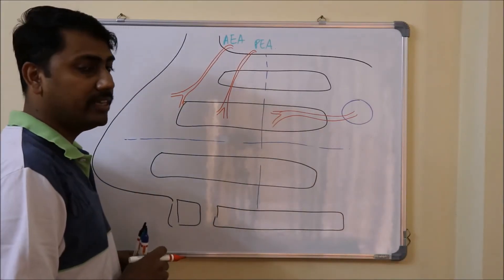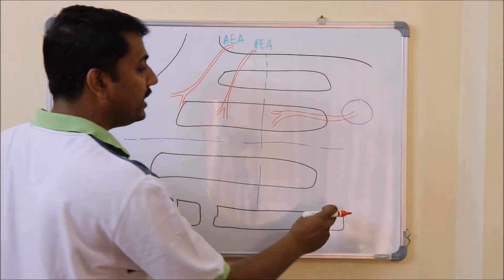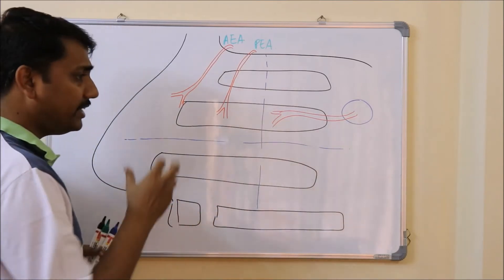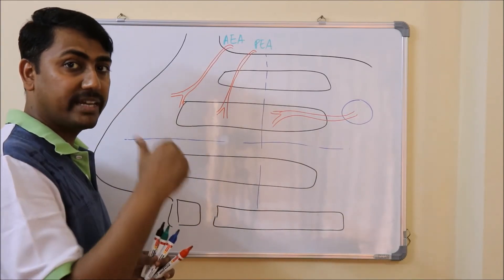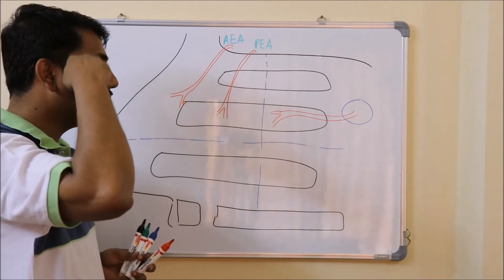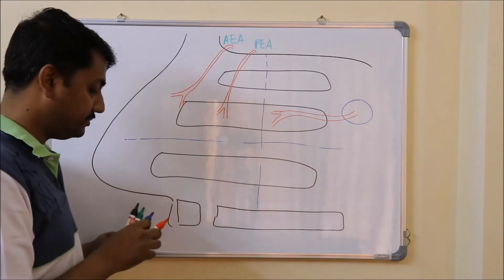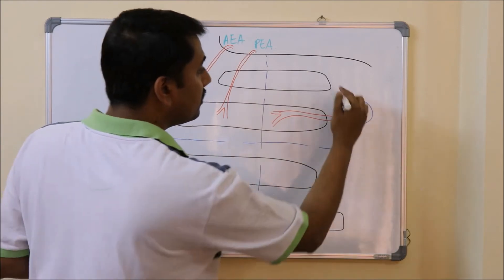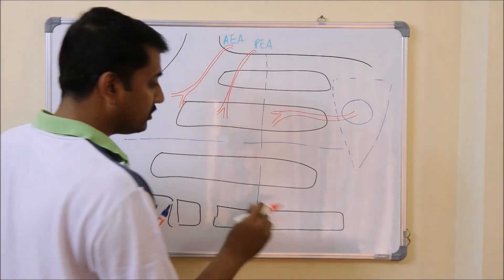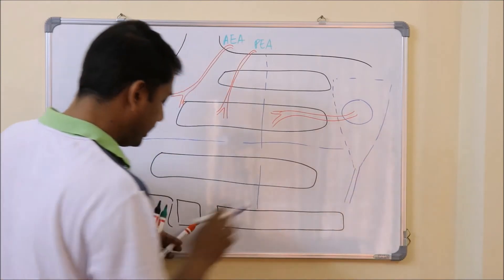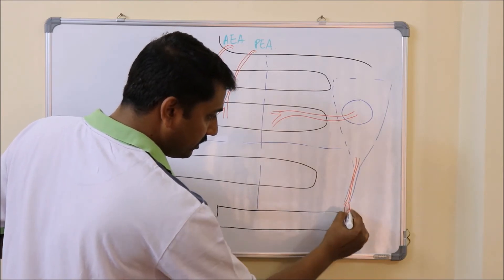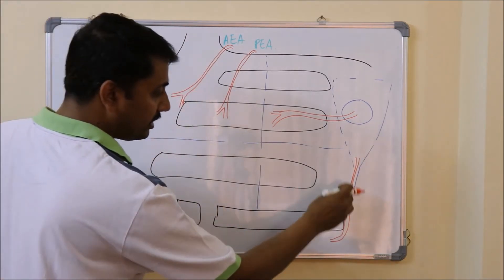The anteroinferior quadrant is also supplied by branches from the greater palatine artery, which pierces the perpendicular plate of the palatine bone forming the posterior part of the lateral wall. The greater palatine artery is a branch from the third part of the maxillary artery coming out from the pterygopalatine fossa. From the apex of this triangular pterygopalatine fossa comes the greater palatine canal, and from this canal emerges the greater palatine artery entering into the oral cavity.